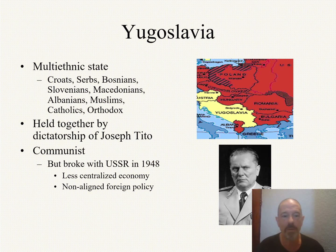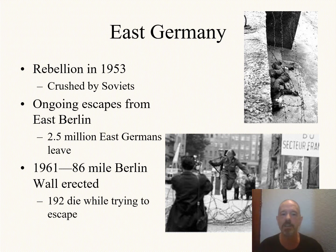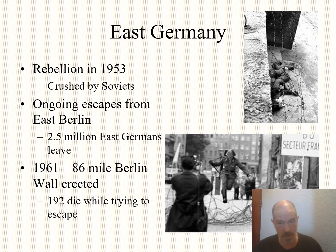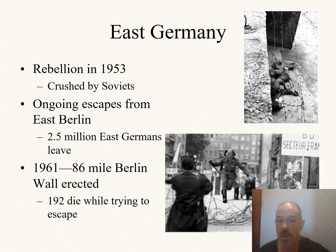In Eastern Germany, there is a rebellion immediately — 1953 — crushed by the Soviets. You see people attempting to escape, not just East Germans, but people from other parts of Eastern Europe who got into East Germany and then to the West. About two and a half million people leave, and the Soviet Union and East Germany set up the Berlin Wall — an 86-mile wall that basically divides east from west.